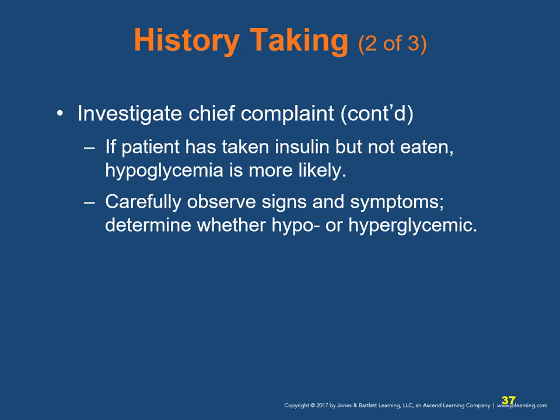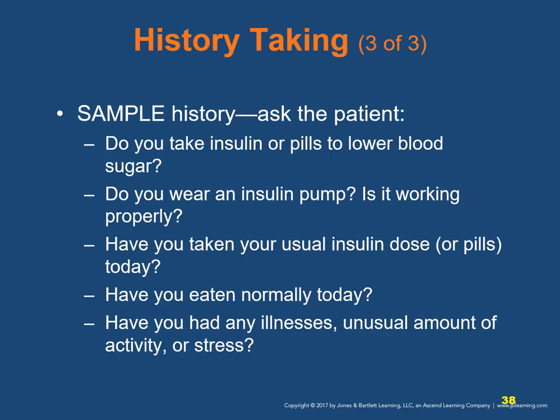History taking is important. If the patient has taken insulin but not eaten, hypoglycemia is more likely. Observe physical signs to determine whether the patient is hyperglycemic or hypoglycemic. For a known diabetic patient, ask: Do you take insulin or pills that lower your blood sugar? Do you wear an insulin pump — is it working properly? Have you eaten normally today? Have you had any illness, unusual stress, or activity? Look for an emergency medical identification tag such as a wallet card, necklace, or bracelet.